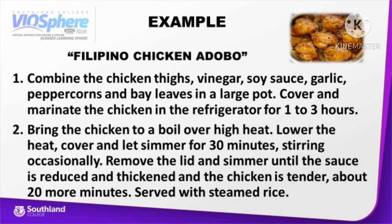Example of chronological type of text — Filipino Chicken Adobo. First, combine the chicken thighs, vinegar, soy sauce, garlic, peppercorns, and bay leaves in a large pot. Cover and marinate the chicken in the refrigerator for 1 to 3 hours. Second, bring the chicken to a boil over high heat. Lower the heat, cover, and let simmer for 30 minutes, stirring occasionally. Remove the lid and simmer until the sauce is reduced and thickened and the chicken is tender, about 20 more minutes. Serve with steamed rice.